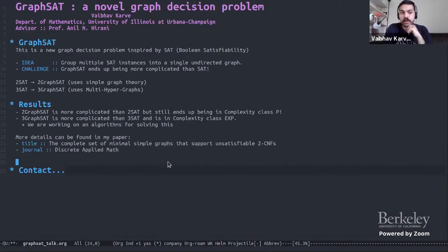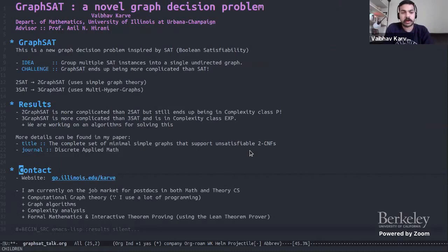Our main results have been that two graph SAT, just like SAT, even though it is two SAT, just like two SAT, even though it is more complicated, still ends up having a polynomial time algorithm. Three graph SAT is genuinely more complicated and we only have an exponential time algorithm. We are working on trying to find better and more efficient algorithms for this problem. All these results can be found in a paper that I published with my advisor in discrete applied math. I can be contacted through all the details that are present on my website. I'm in my final year of PhD, so I'm currently on the job market for postdocs in both mathematics or in theory CS. Most of my interest and my work revolve around computational graph theory because I do a lot of programming in Python and my style of coming up with results is usually an experimental style. So I work around graph algorithms, complexity analysis, and this is my newfound obsession, which is formal mathematics and interactive theorem proving, especially using theorem provers like lean or cock that you might have heard of. Thank you to Gautam for giving me the opportunity to speak.